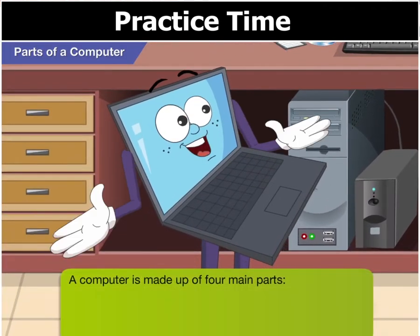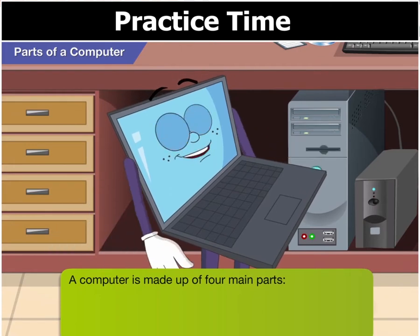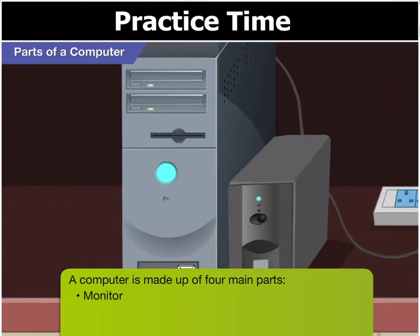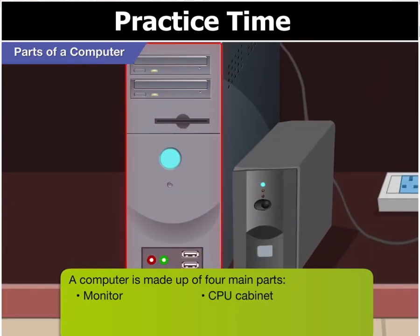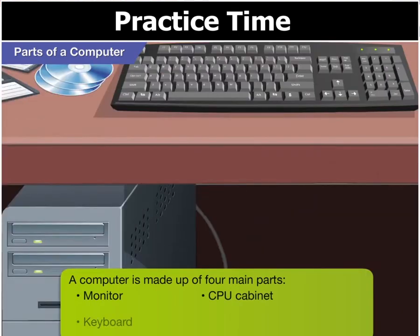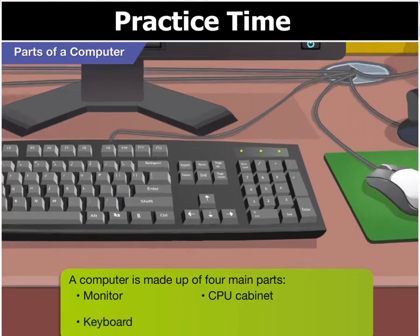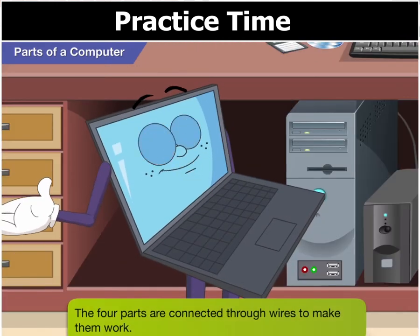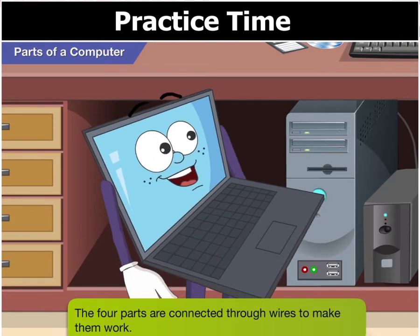A computer essentially is made up of four main parts. These are the monitor, the CPU cabinet, the keyboard and the mouse. The four parts are connected through wires to make them work.